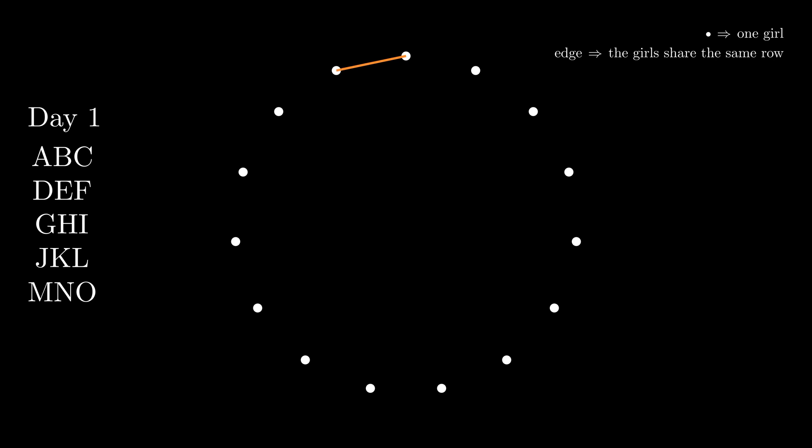For instance, this edge means that the first two girls stay in the same row on the first day. Adding edges between the first and the third node and then between the second and the third one, we get the first row from day 1. We can continue to add orange edges and get all the rows from day 1.